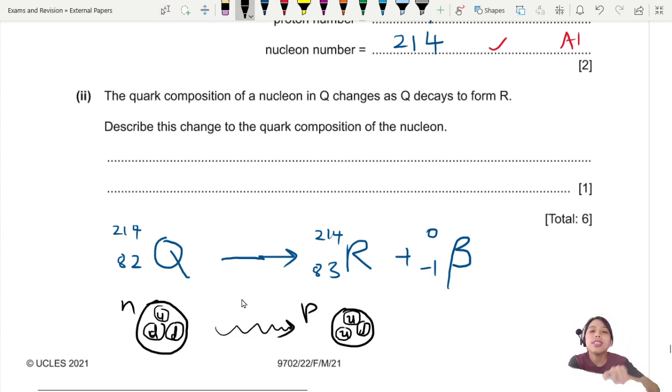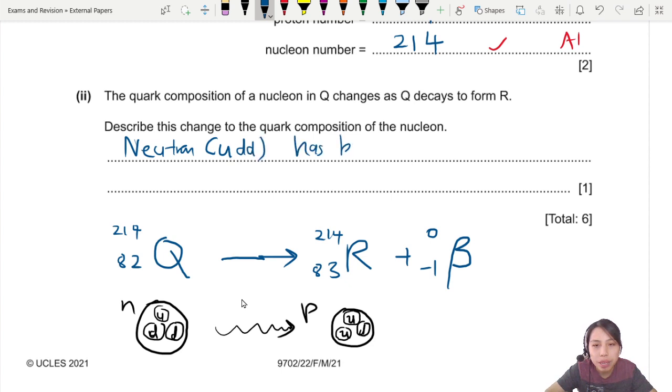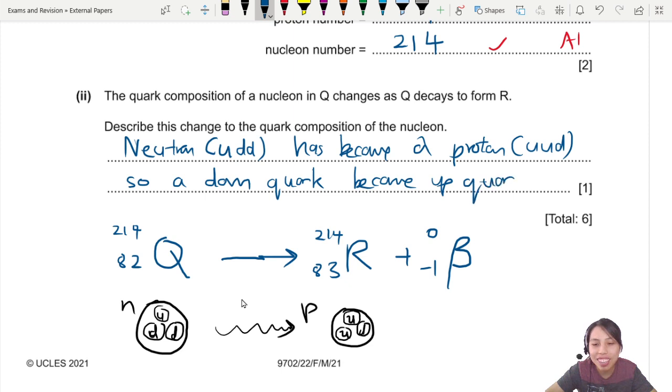So we need to write out the answer here. What is the quark composition? Well, let's write it out. So you say, a neutron has become... say what neutron is. A neutron is up, down, down, has become a proton, which is up, up, down. So a down quark has become, or became an up quark. The world is a mysterious place and there's not much we know about it yet. So you talk about the down become up quark. This is the main thing.